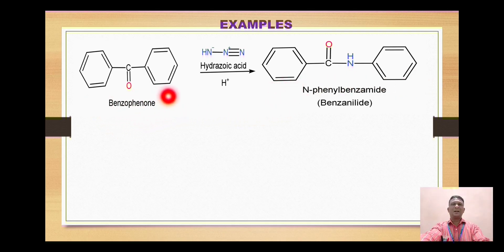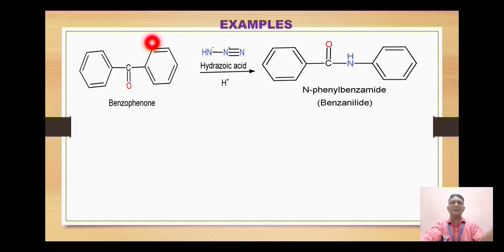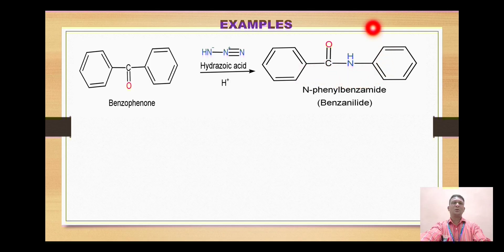Looking at the starting materials: here is a ketone and it is a carboxylic acid. As mentioned earlier, whenever it is a ketone, the NH group gets inserted between the carbonyl carbon and the alkyl or aryl group. So the NH group is inserted between this portion to give C-O-N-H, forming an amide.